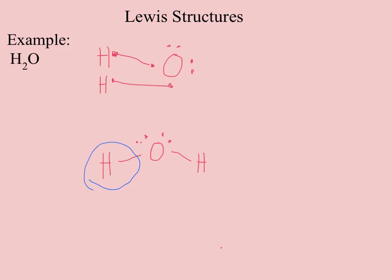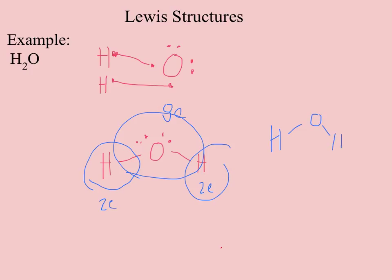That leaves two lone pairs around oxygen. When you count up electrons, hydrogen has just two electrons — remember, two will do for element five and smaller. Oxygen now has four pairs around it, or a total of eight electrons. So the Lewis structure for water has each hydrogen bonded to oxygen, with two lone pairs around the oxygen for a total of eight.